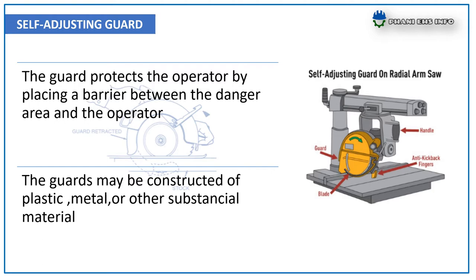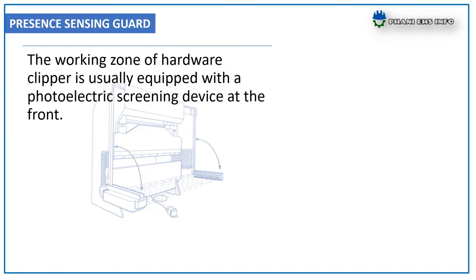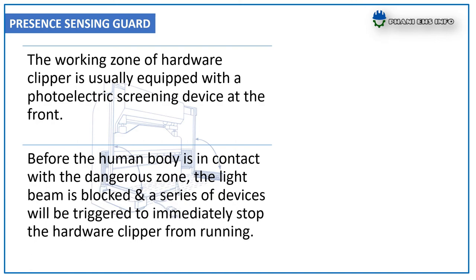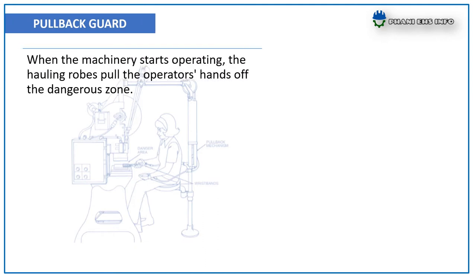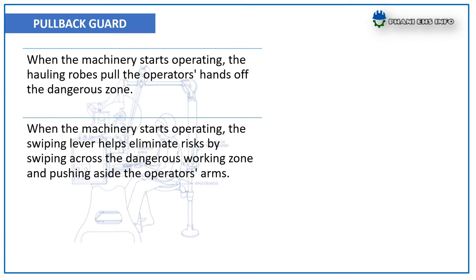Presence sensing guard — the working zone of a hardware clipper is usually equipped with a photoelectric screening device at the front. Before a human body contacts the dangerous zone, the light beam is blocked and a series of devices will be triggered to immediately stop the hardware clipper from running. Pullback guard — when the machinery starts operating, the hauling ropes pull the operator's hands off the dangerous zone.